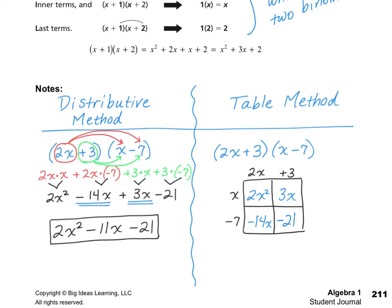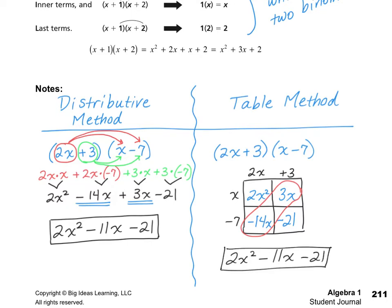Now I need to look and see what I have. I notice I can simplify by combining two of those middle terms together. My final answer: I still have 2x squared — I want to make sure to write it in standard form — so I'll put 2x squared first, then combine the two middle terms to get negative 11x, and then put minus 21 at the end. You'll notice that in both cases I got the exact same answer, whether I used the distributive property or the table method.